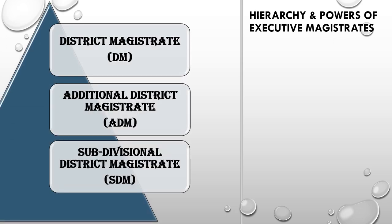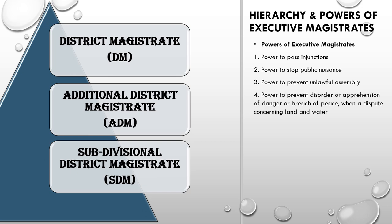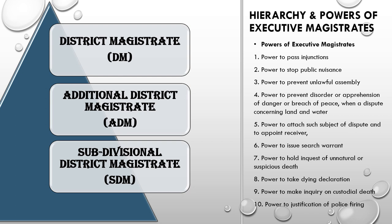The hierarchy and powers of Executive Magistrates: at the top is the DM — District Magistrate, popularly known as Collector — second is ADM, Additional District Magistrate, and third is SDM, Sub-Divisional Magistrate. The powers of Executive Magistrates include: power to pass injunction, power to stop public nuisance, power to prevent unlawful assembly, power to prevent disorder or apprehension of danger or breach of peace when a dispute concerns land and water, power to attach the subject of dispute and appoint a receiver, power to issue search warrants, power to hold inquest of unnatural or suspicious death, power to take a dying declaration, power to make inquiry on custodial death, and power of justification of police firing.